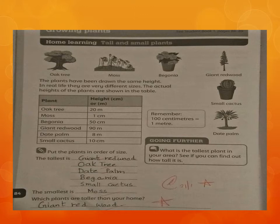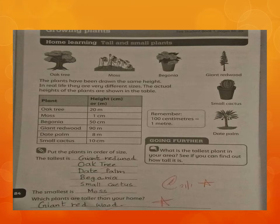The oak tree sheds all its leaves during fall and has spirally arranged leaves with rounded edges. Mosses are spread throughout the world, found in moist shady locations, and best known for carpeting woodland and forest floors. Begonia flowers grow closely together. The giant redwood is a very tall tree — the tallest. Cactus is adapted to hot, dry climate. From the date palm tree we can get dates.